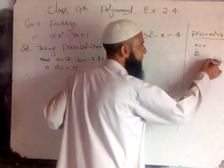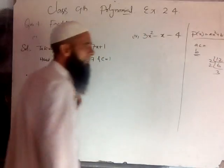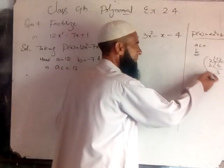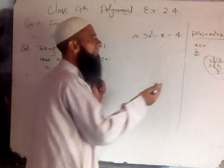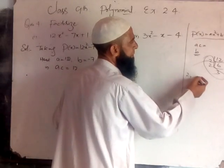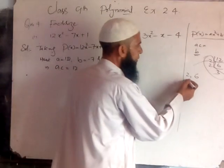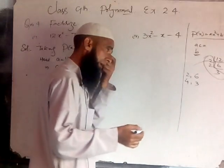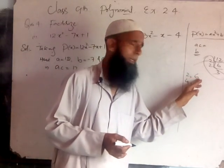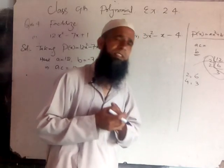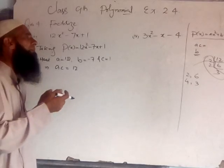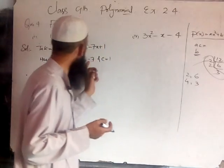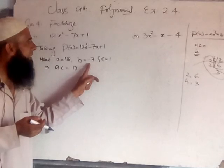The factors of 12 are: 2 into 6, or 2 into 2 into 3. The factor pairs to consider are: 4 and 3, or 6 and 2. We need the sum to be minus 7, so we take minus 4 and minus 3, since their product is 12 and their sum is minus 7.